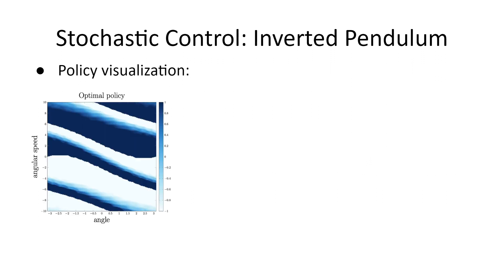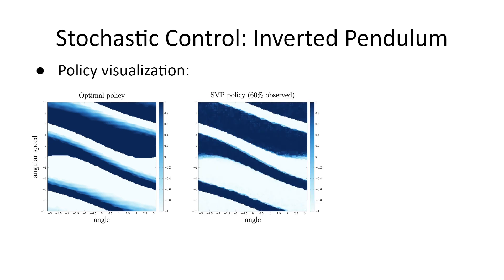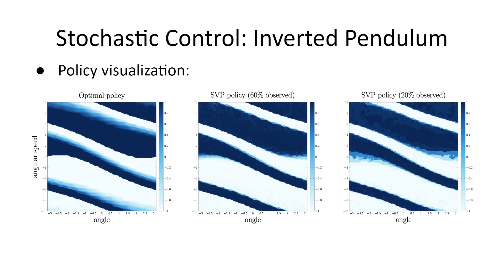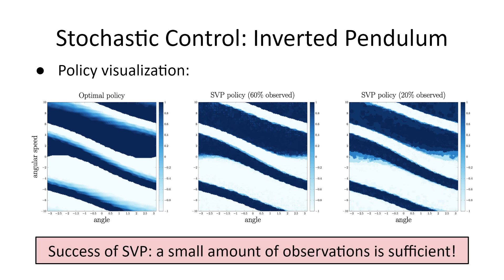To demonstrate that, the heatmap of the optimal policy is provided. Next, we show the policy obtained from SVP with only 60% of state action pairs calculated at each iteration. The resulting policy is almost the same as the optimal one. Further, we reduced the number of observations to only 20%. As one can see, this only leads to a very small difference in terms of policy. Overall, we conclude that SVP is a successful approach, which exploits the underlying structure efficiently. Finally, we remark that similar results for several other control tasks are presented in the paper as well.